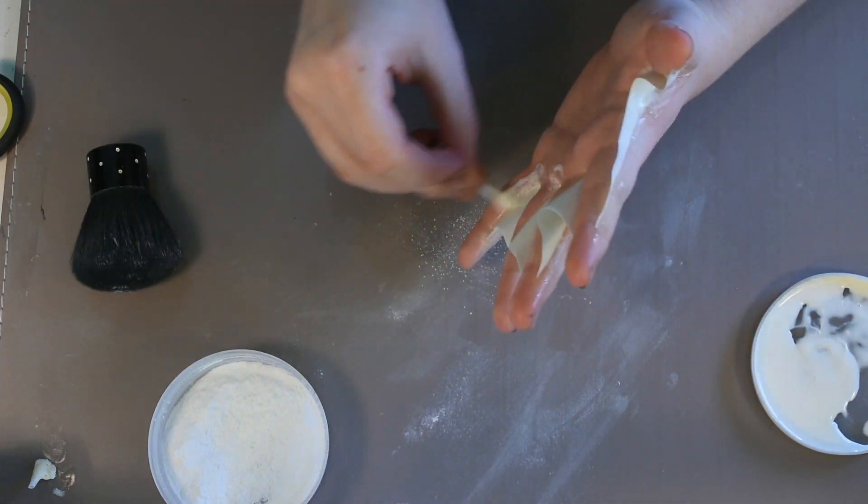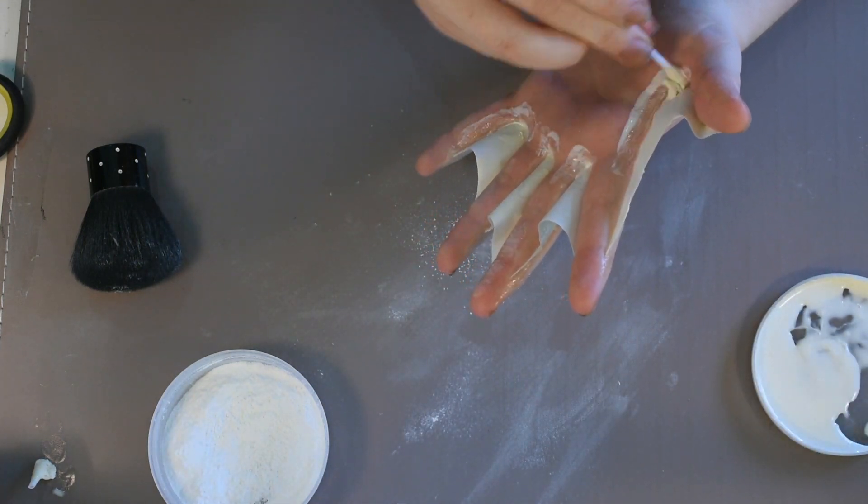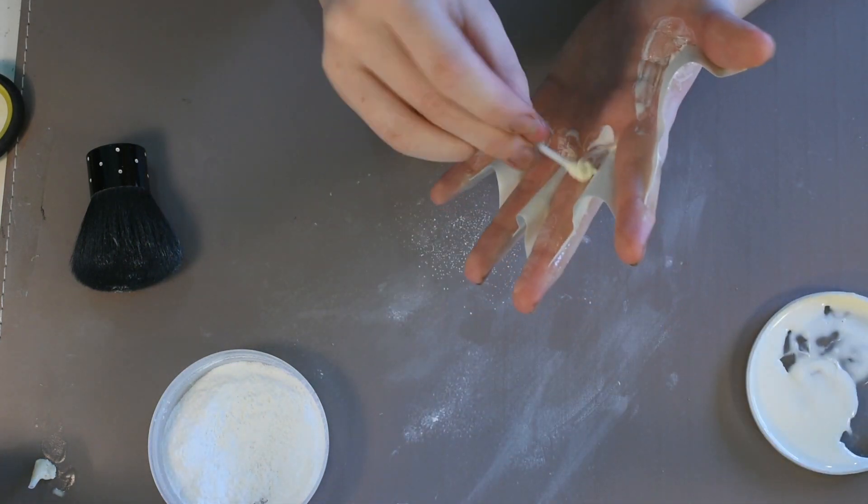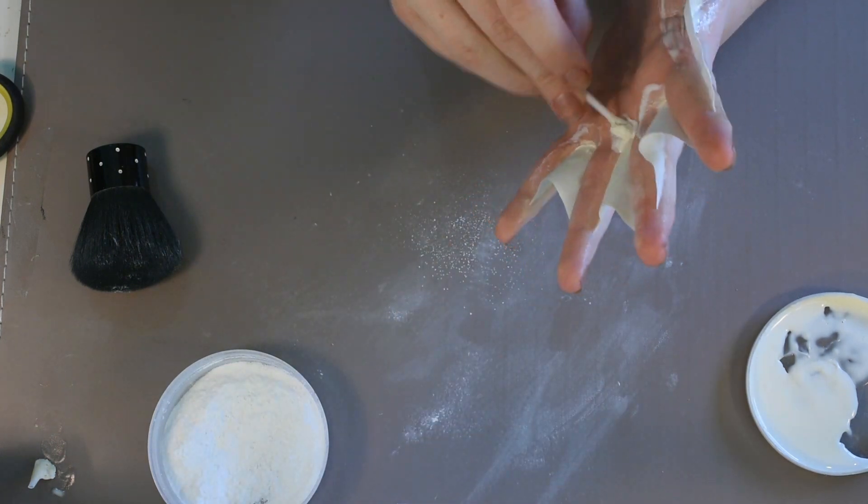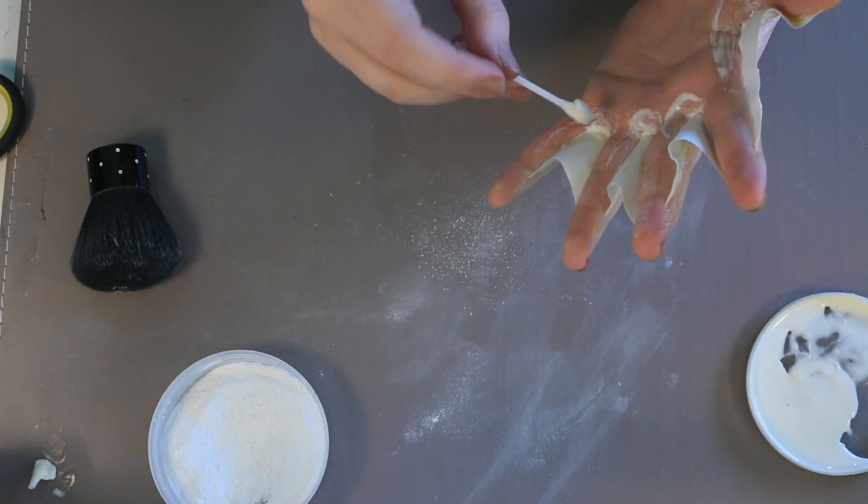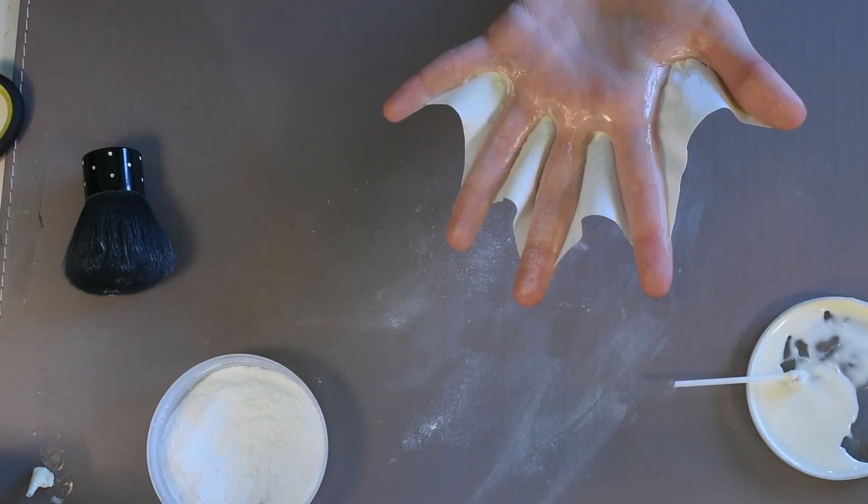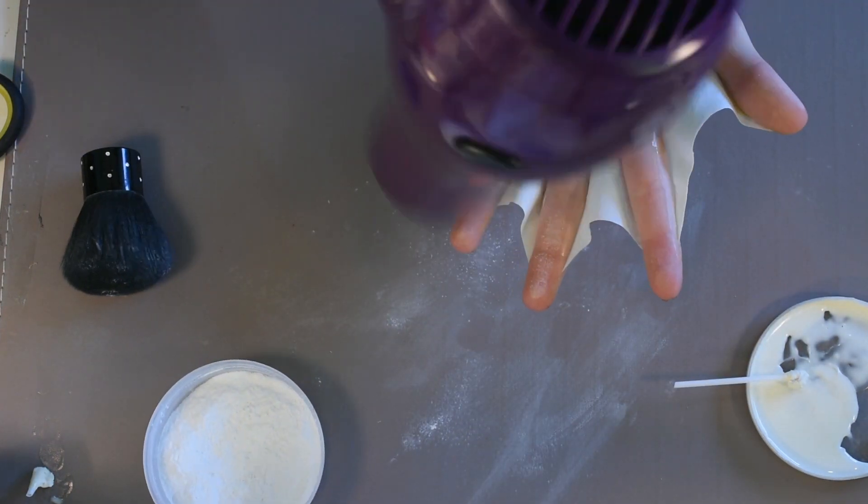When you are almost done with all your webs, go through and check for any bits of latex that may have come up from your skin. Seal them back down with more latex. Once you have got a good amount of coats on each web—I would say at least four to five—give it a good dry with a blow dryer and one last powder.